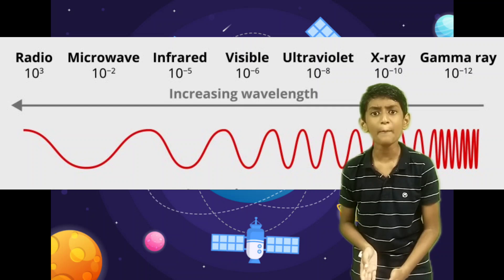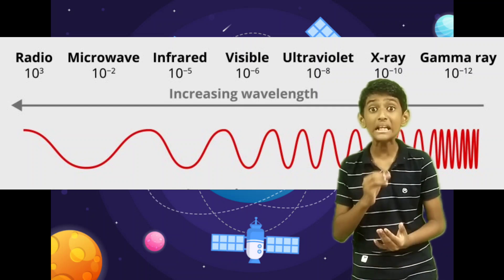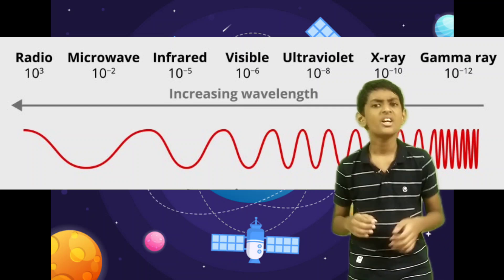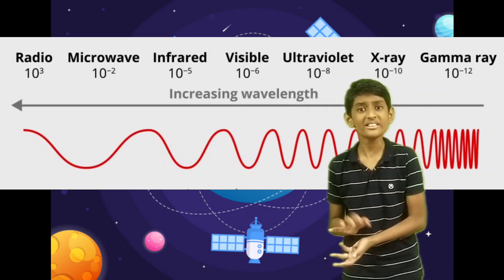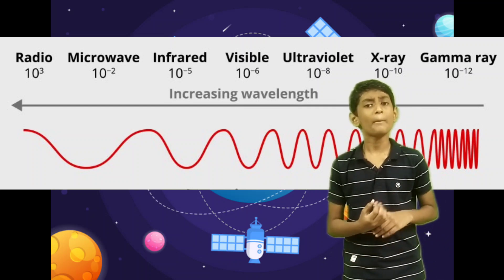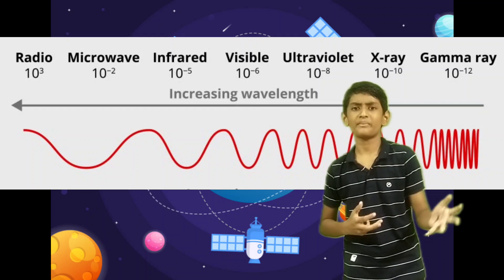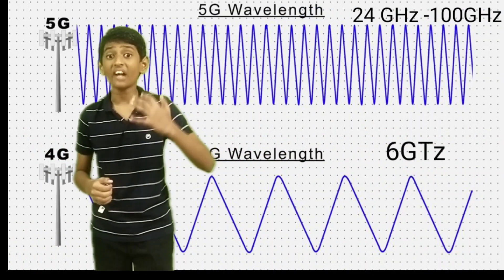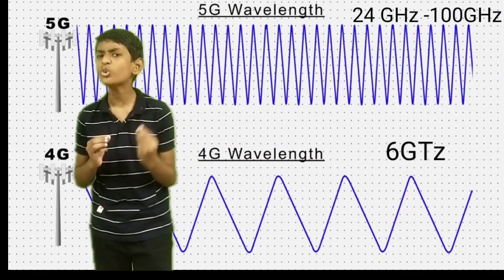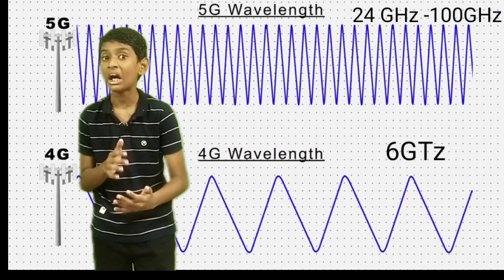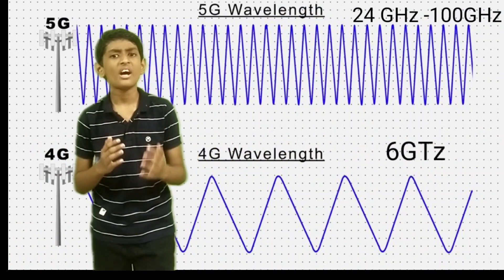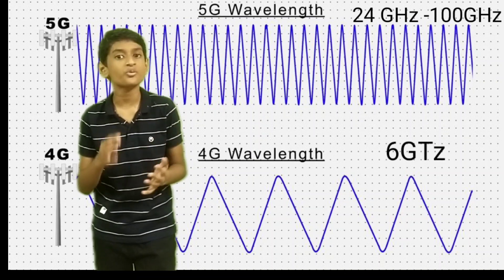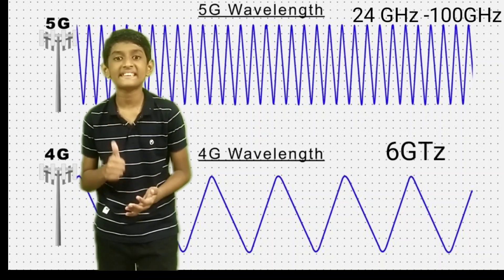These higher bands are called millimeter waves, which were previously unused but have now been opened by regulators. 5G waves travel at 24 to 100 GHz, whereas 4G operated at around 6 GHz.